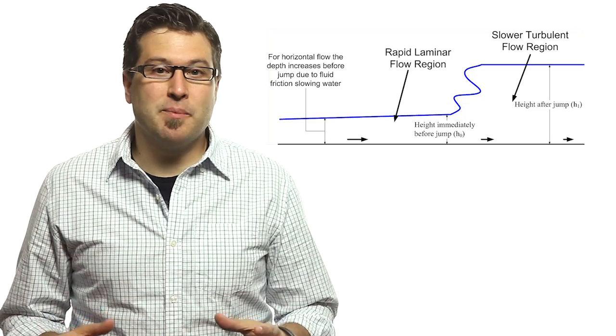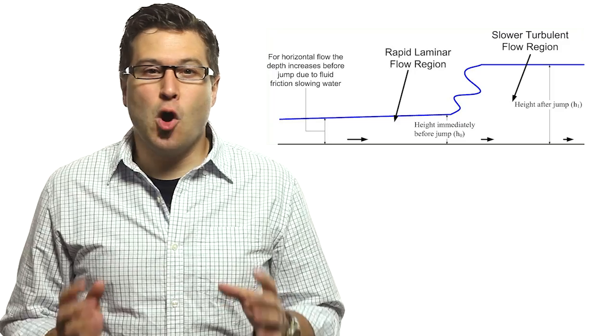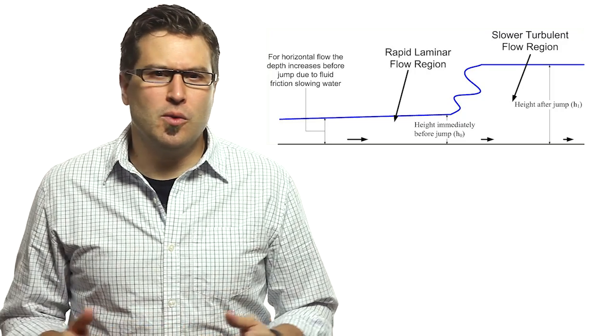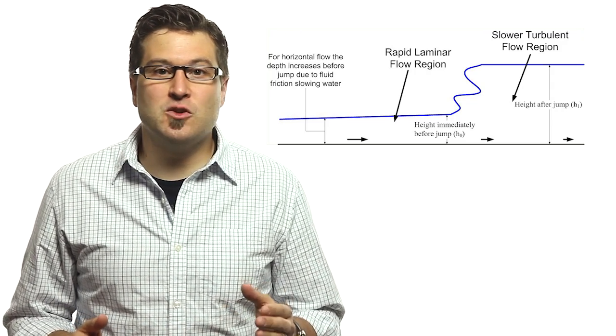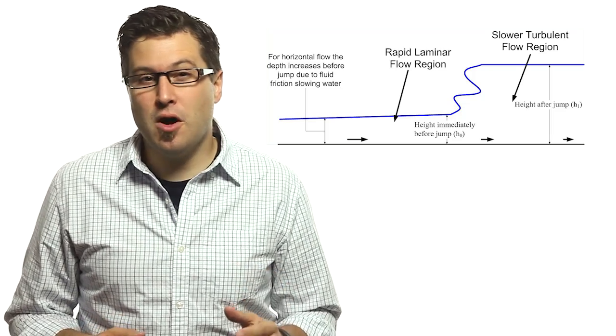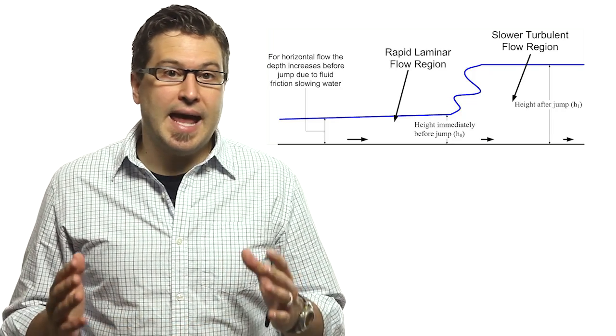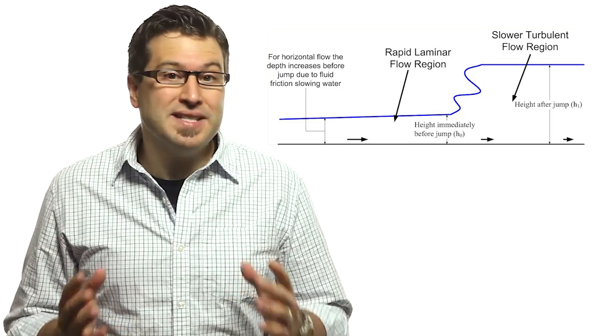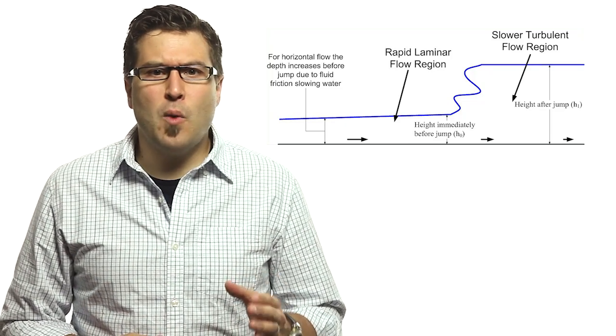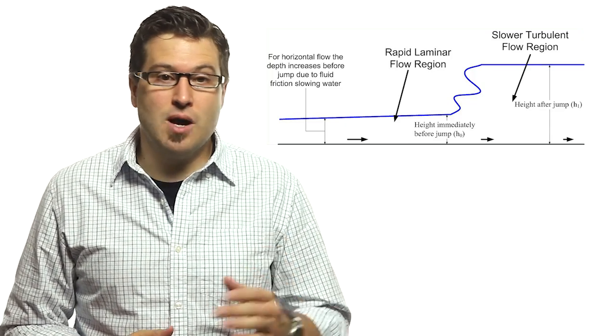A hydraulic jump is a phenomenon that naturally occurs in open channel water flow. When a moving flow of water releases into an area of lower velocity flow, it slows down very quickly. The kinetic energy of the flow is converted to potential energy in the form of a wave known as a hydraulic jump.